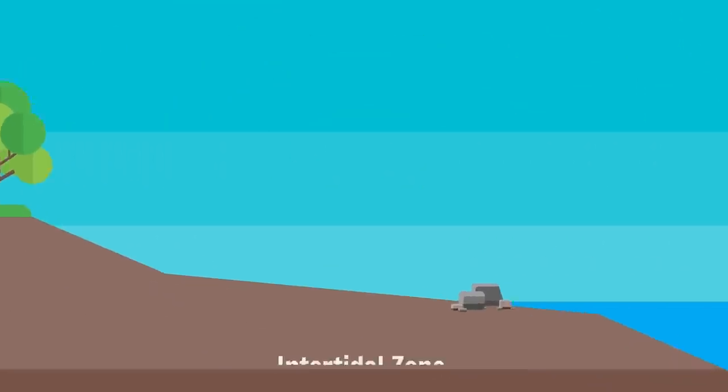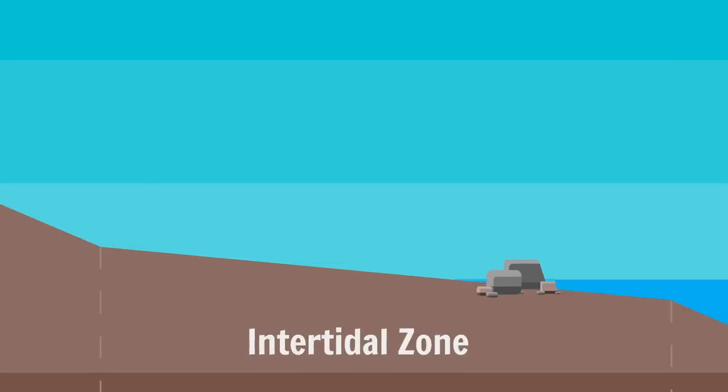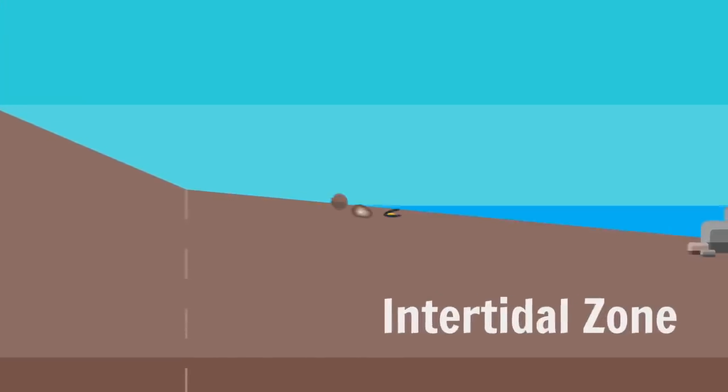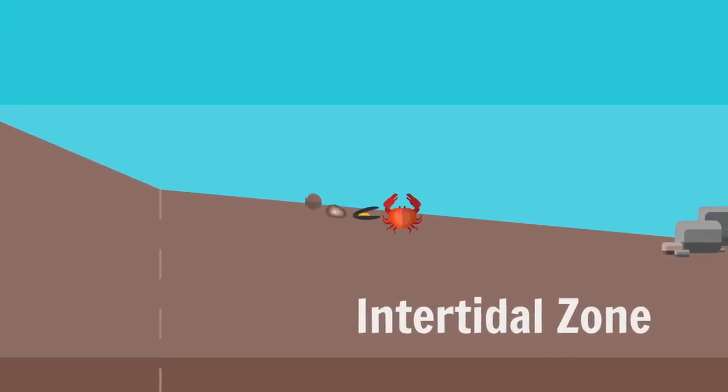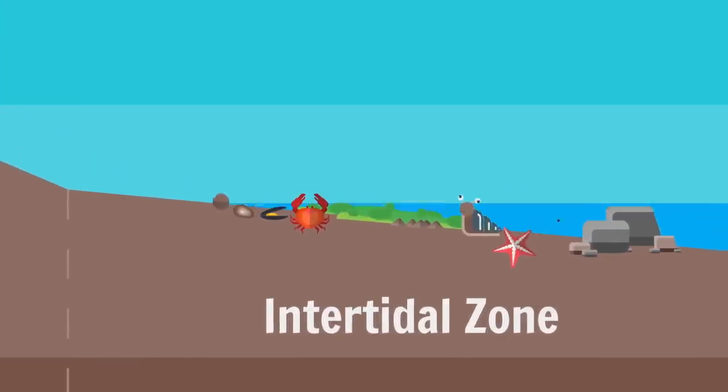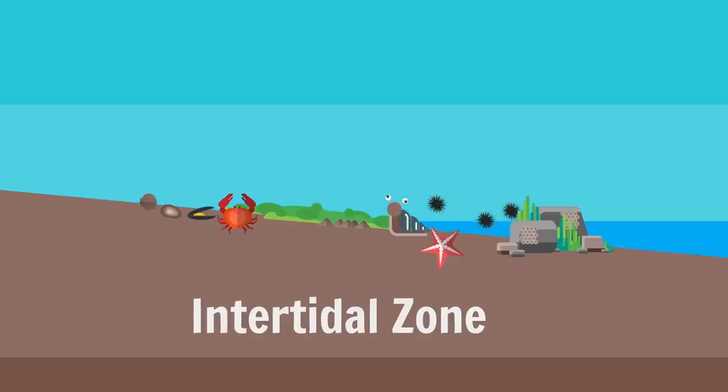Anyways, maths aside. Intertidal zones, the parts of the shore that are underwater at high tide but above water at low tide, are super productive ecosystems. Clams, oysters, mussels and crabs can be farmed. Algae, limpets, sea snails, starfish, urchins, barnacles and seaweed can all be foraged.